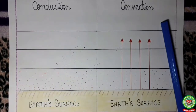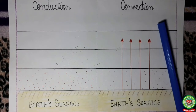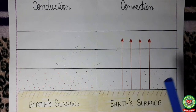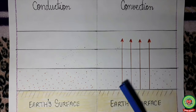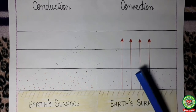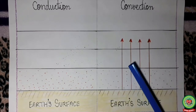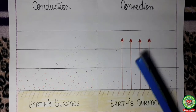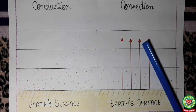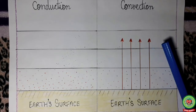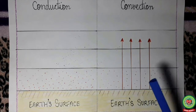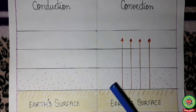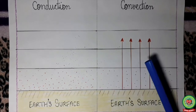Convection takes place in liquid and gas. When the lowermost layer is heated, the air becomes warm, it expands, becomes light, and rises up. The heat of the lower layer is carried to a higher layer by the movement of this air, which is also called the convectional air current. Even the ocean currents carry heat from the equator to the poles by convection.